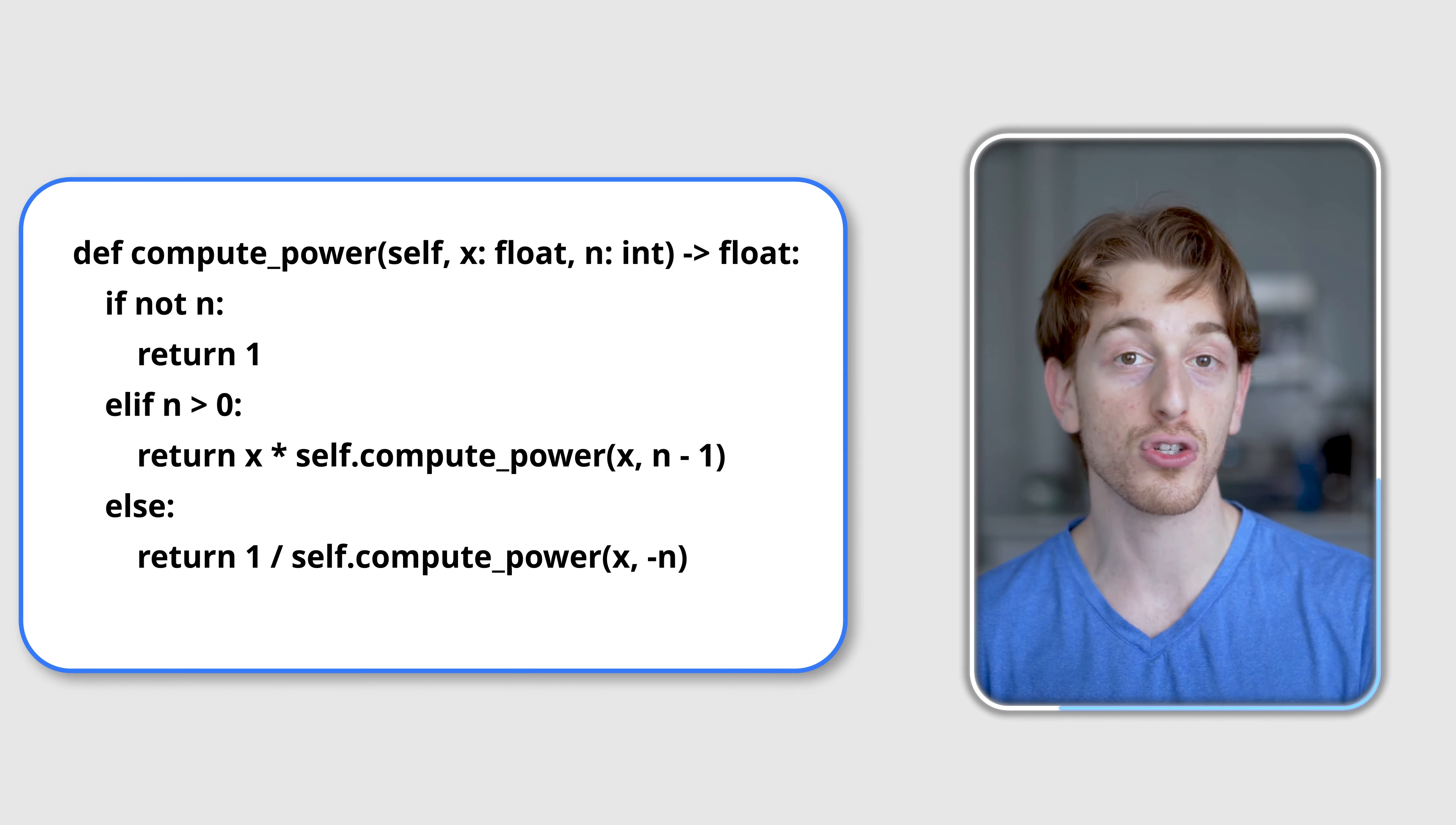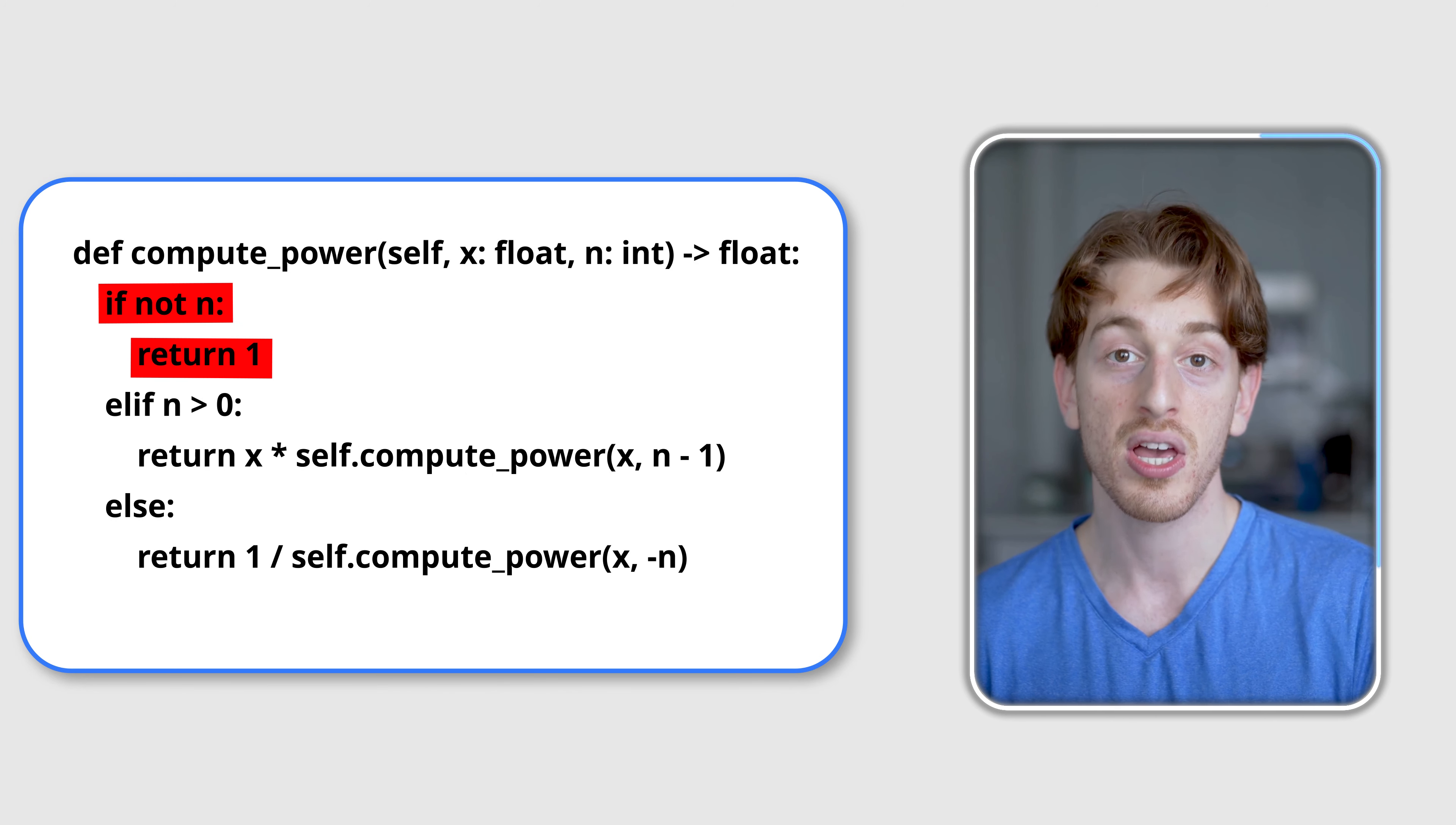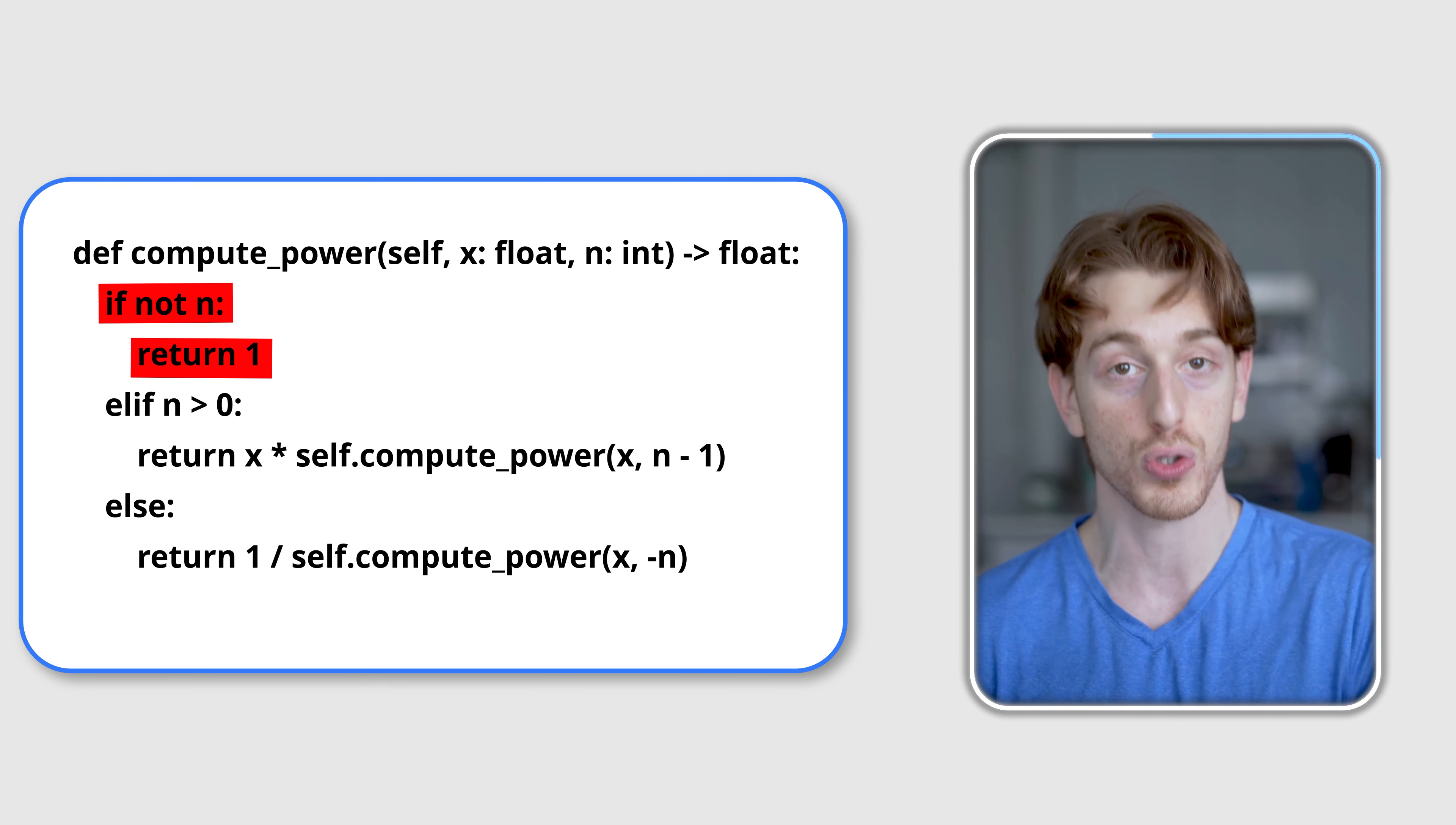Let's see another example. Here we want to compute the nth power of some number x. Our base case is when n is equal to 0, in that case we always return 1, because any number to the power of 0 equals 1.